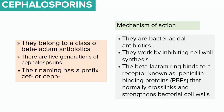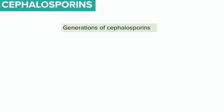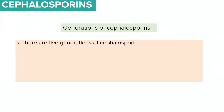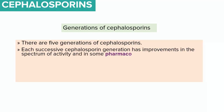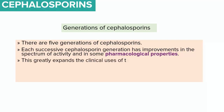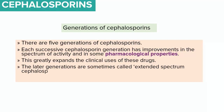These proteins normally cross-link and strengthen the bacterial cell walls. Therefore, once disrupted by these antibiotics, the cell walls of bacteria weaken. Each successive cephalosporin generation has an improvement in the spectrum of activity and in some pharmacologic properties. The later generations are sometimes known as extended-spectrum cephalosporins, or ESCs.